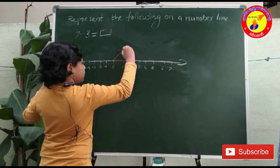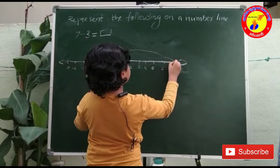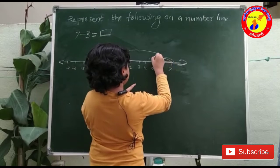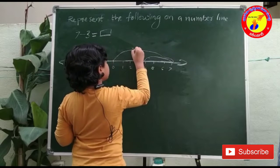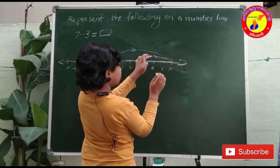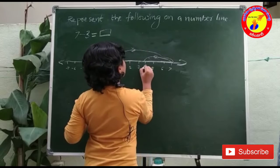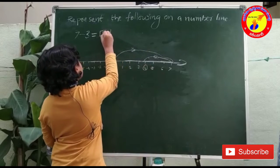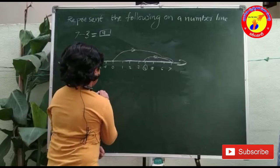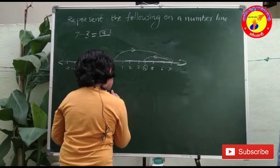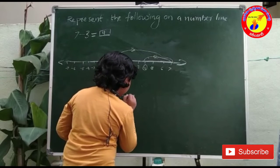Starting at 7, we count back 3 steps: 1, 2, 3. So, 7 minus 3 is equal to 4.